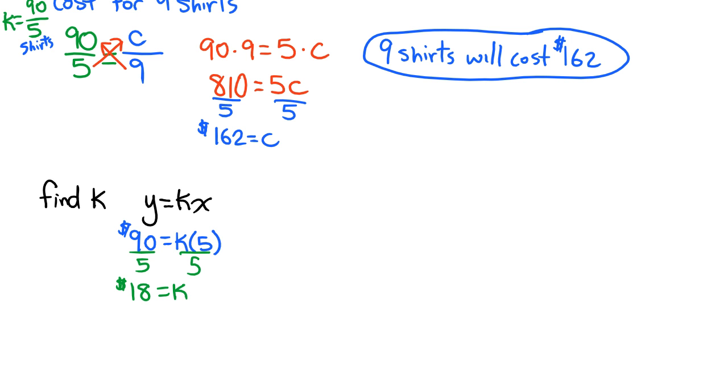Really what this says is that for every shirt, we are paying $18. So then what we could do is we could create an equation that says y equals 18x, where we can plug in any number of shirts now and find the cost.